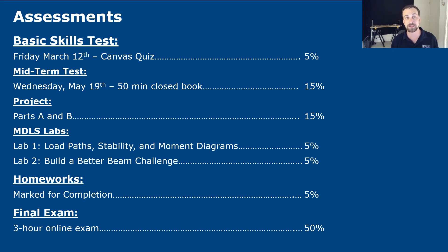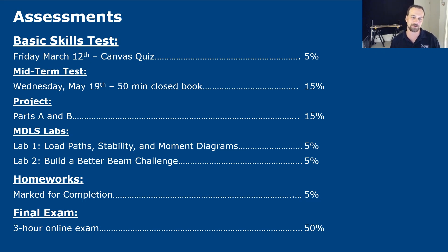Lab 2, held in May, is the Build a Better Beam Challenge — a really exciting lab. We've done this before in a Structures Day format. We're essentially going to get you to build a beam and test it to failure; the most efficient beam — the one which can take the most load while being lightest — wins. We might even have some small prizes, like cookies, on top of bragging rights.